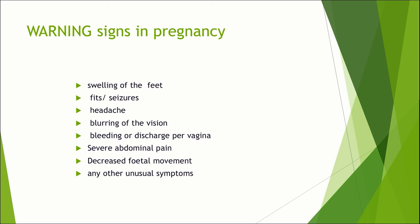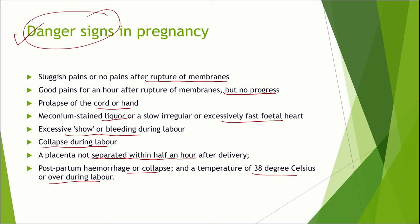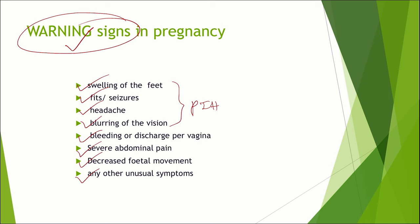Then we move on to the warning signs in pregnancy. These warning signs are very important — we need to educate mothers regarding them, and when these warning signs appear, they should immediately seek healthcare. The first signs include swelling of feet, fits, headache, and blurring of vision — all will be signs of pregnancy-induced hypertension, preeclampsia, and eclampsia. Bleeding or discharge per vagina, severe abdominal pain, decreased fetal movement, or any unusual symptoms will be considered as warning signs in pregnancy. Remember, these warning signs are different from the earlier danger signs — warning signs are for educating the mother to screen for complications at home.